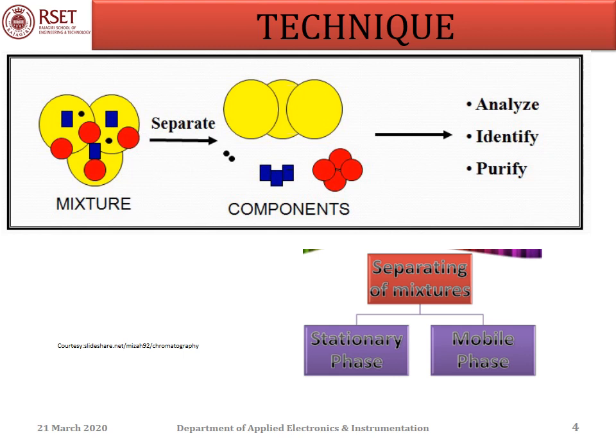Components to be separated are distributed between two phases called stationary phase and mobile phase. The stationary phase may be a solid adsorbent or liquid partitioning agent. The mobile phase is usually a gas or liquid, and it transports the constituents of the mixture through the column.